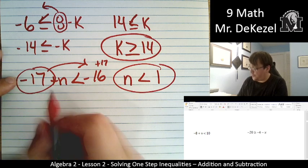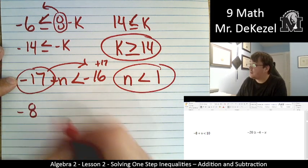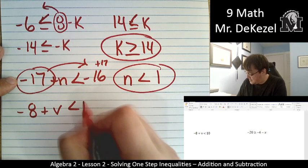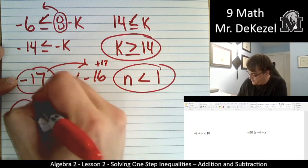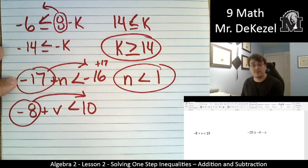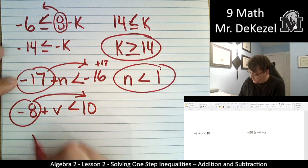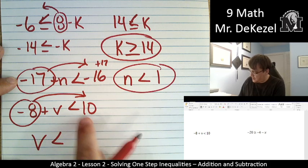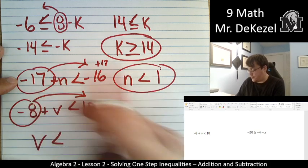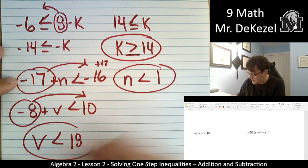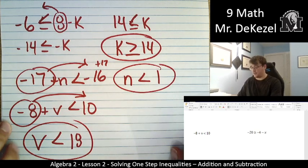Let's do a couple more. We have -8 + v < 10. We're going to get v all by itself. So we move the 8 over. v < 10 + 8, right? It goes to positive on the other side, so that's 18. v < 18.